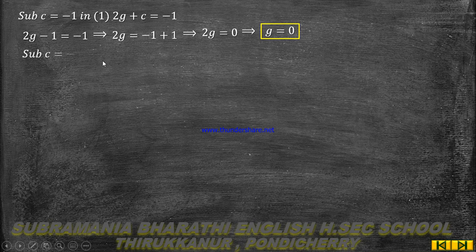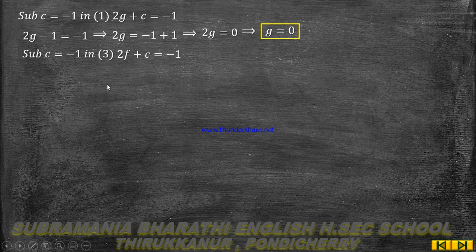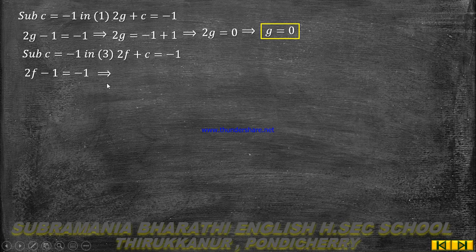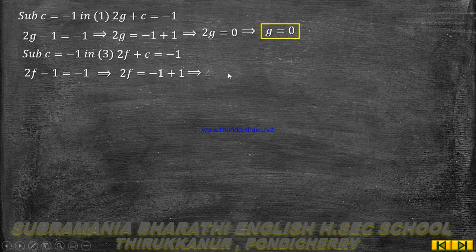Substituting c equal to minus 1 into equation number 3: 2f plus c equal to minus 1, so 2f minus 1 equal to minus 1. The minus 1 values cancel, giving 2f equal to 0, therefore f equal to 0.